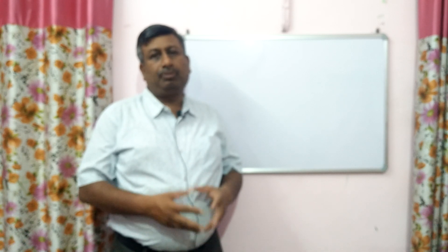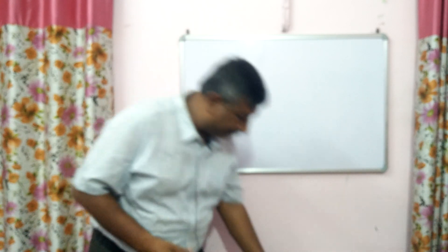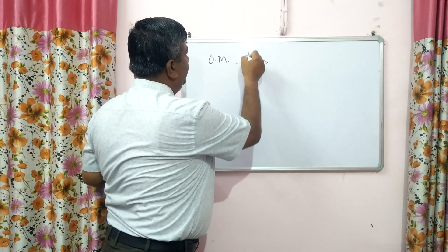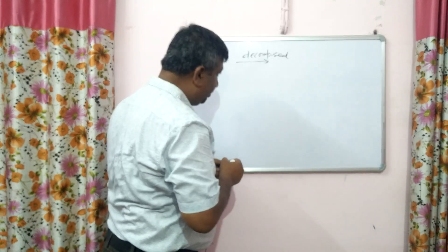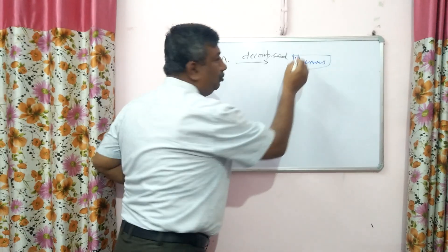Humus is entirely different from organic matter. Organic matter is simply the plant residue or animal residue, and after decomposition, several new compounds are formed and synthesized. Humus is a very complex material; it is not a single material, and humus formation takes time. Organic matter is decomposed, then humus formation takes place, and this humus is not a single compound.